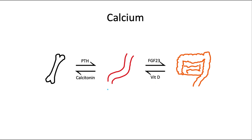PTH pulls calcium out of bone and puts it into the blood — very important when thinking about hyper- and hypoparathyroidism. Calcitonin does the opposite, moving calcium from the blood back into bone; one way to remember this is that it 'tones down' calcium levels in the blood. FGF-23 promotes calcium and phosphate wasting from the body, whereas vitamin D pulls calcium from what we eat and drink into the bloodstream.